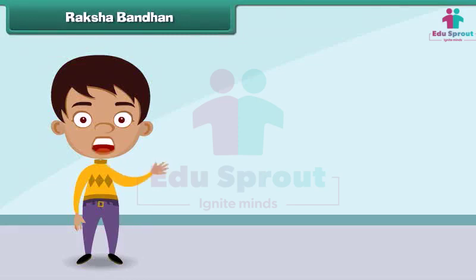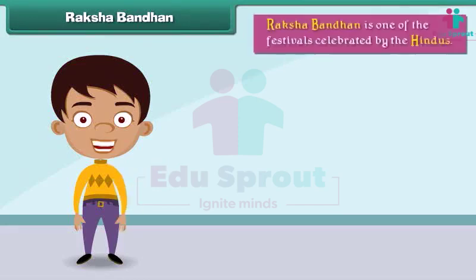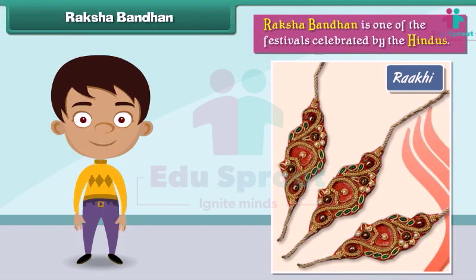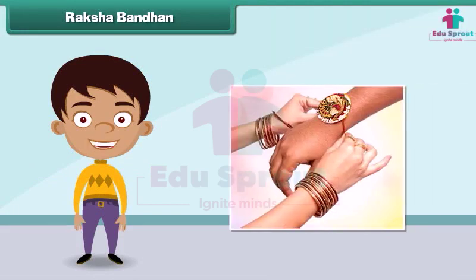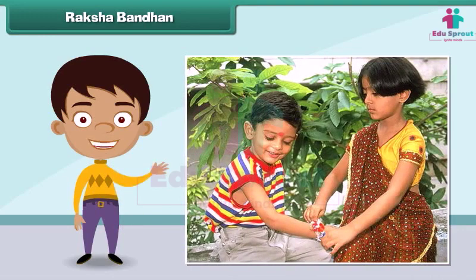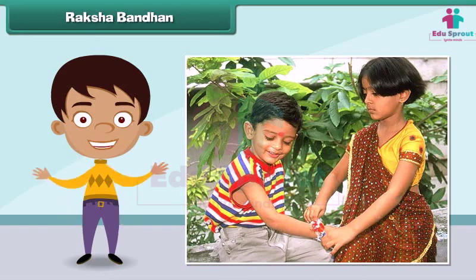Raksha Bandhan is one of the festivals celebrated by the Hindus. On this day, sisters tie rakhis on the wrists of their brothers and pray for their well-being. In return, brothers promise to protect their sisters from all evil.